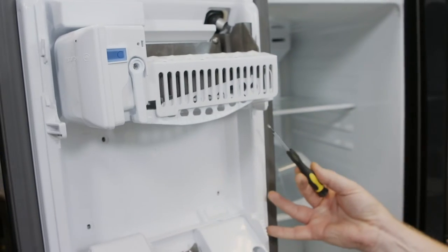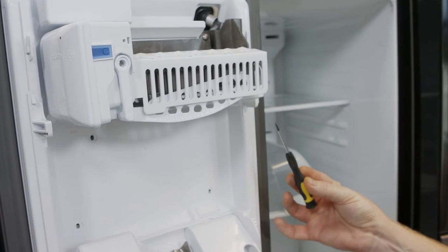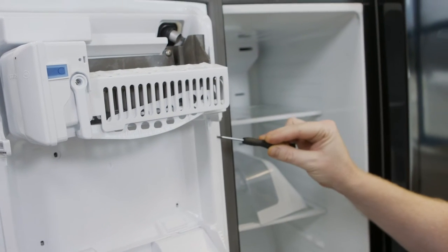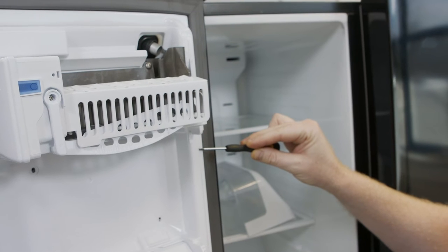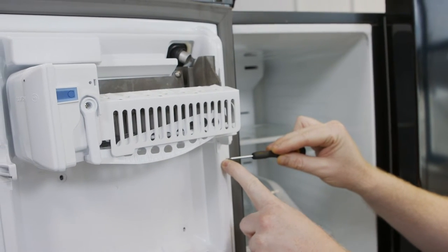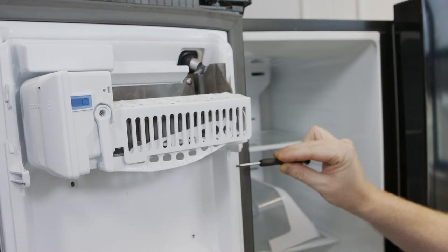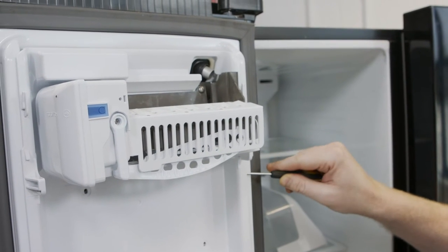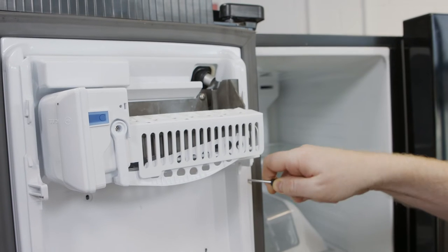Then, using the flathead screwdriver, slide it into the right-hand side of the panel to press and release the locking tab. The locking tab is indicated by this arrow here. Put it in, push it down to release the tab.